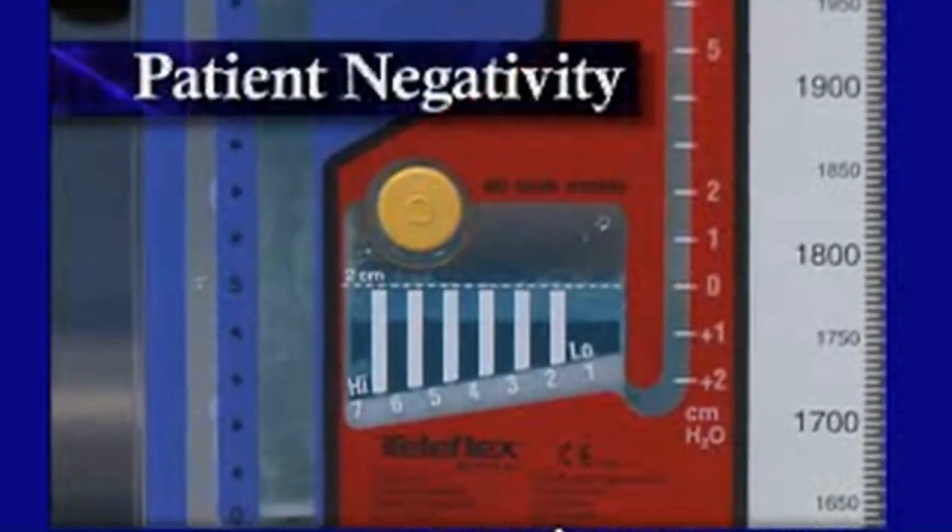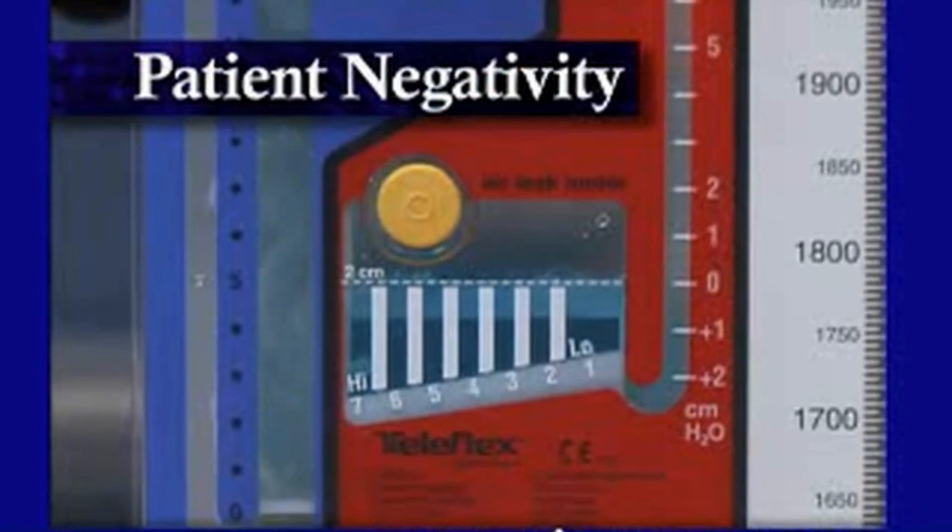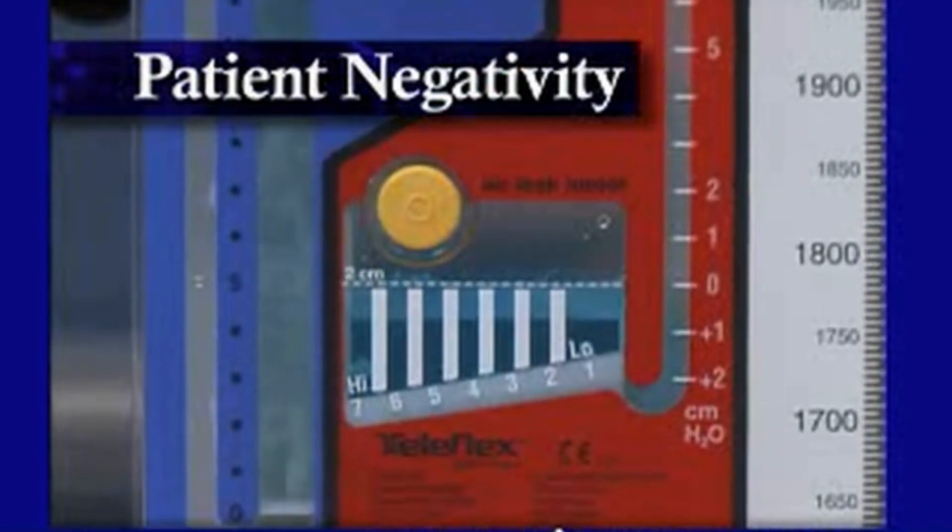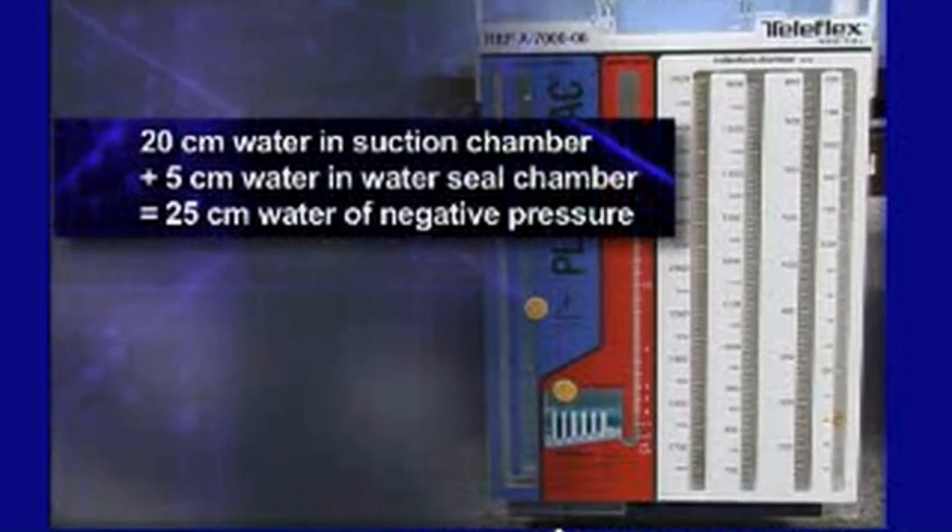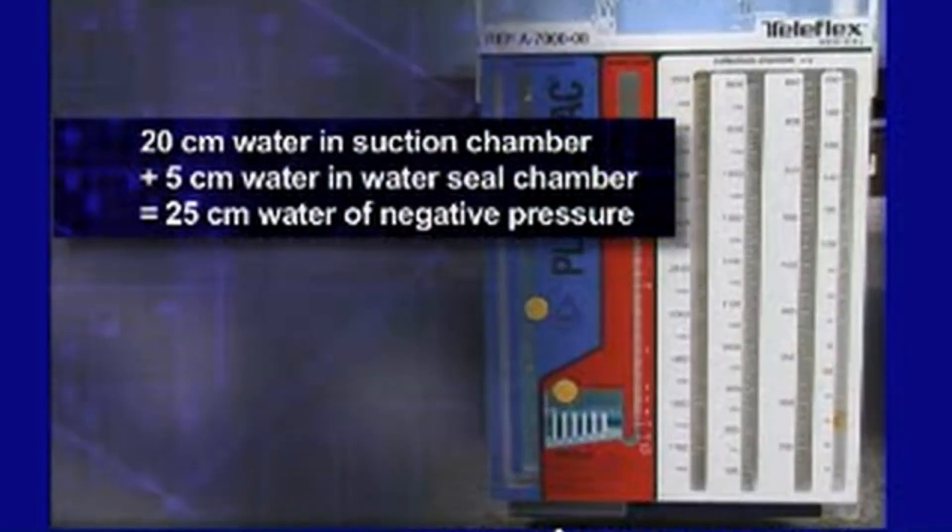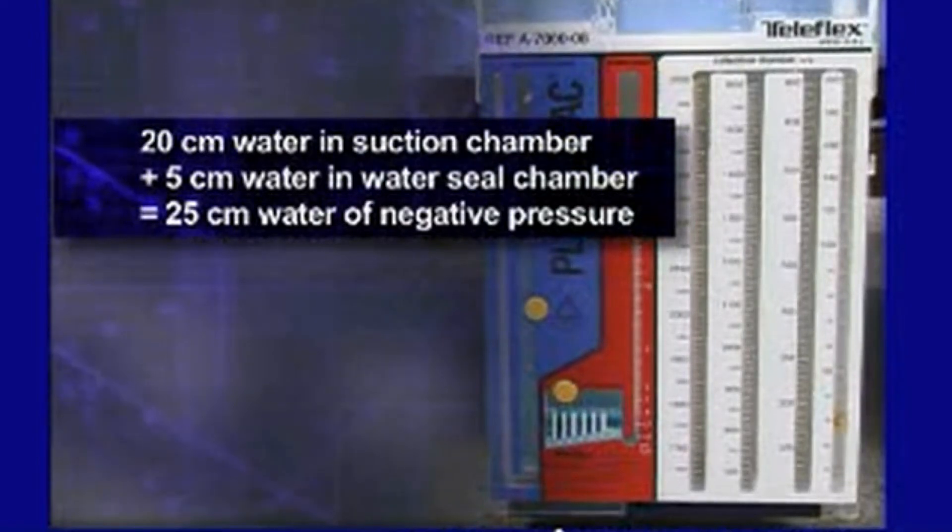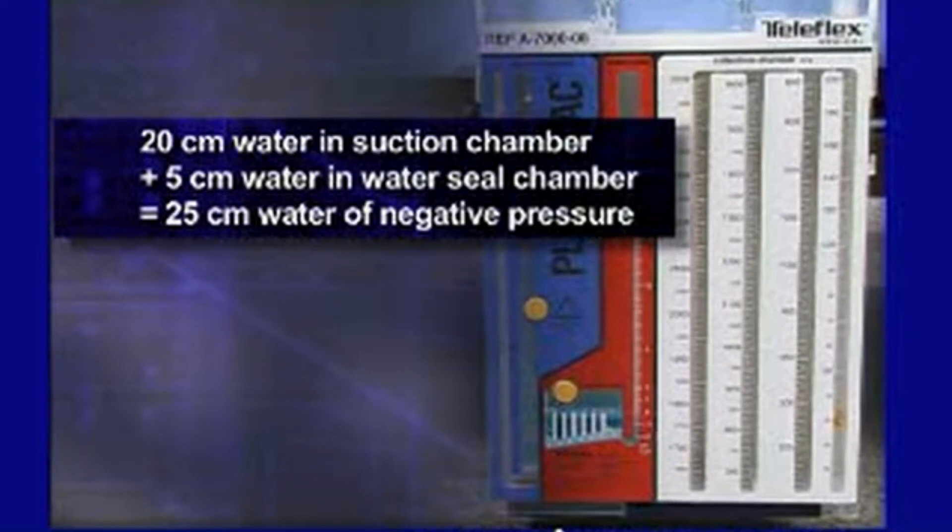Patient negativity can be determined by adding the level of imposed suction to the number corresponding with the water level in the water seal. For example, 20 centimeters of water in the suction chamber is added to 5 centimeters of water in the water seal chamber. This equals 25 centimeters of water, or the total amount of negative pressure in the patient's chest cavity.